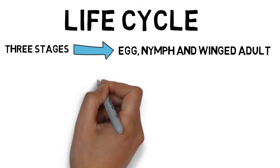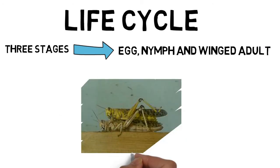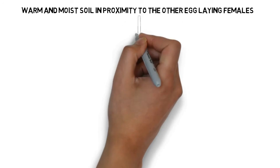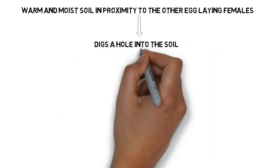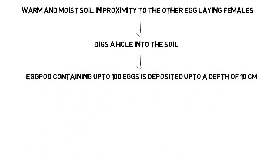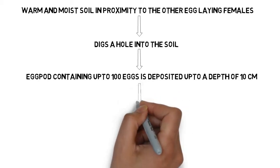Copulation takes place when a mature male hops onto the back of a mature female and grips her body with his legs. The sperm is transferred from the tip of his abdomen to the tip of hers, where it is stored. The process takes several hours and one insemination is sufficient for a number of batches of eggs. The female locust lays eggs in warm and moist soil in close proximity to other egg-laying females. She probes the soil with her abdomen and digs a hole into which an egg pod containing up to 100 eggs is deposited to a depth of about 10 centimeters.